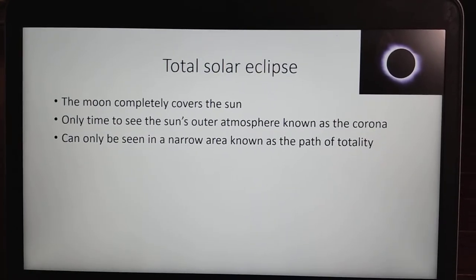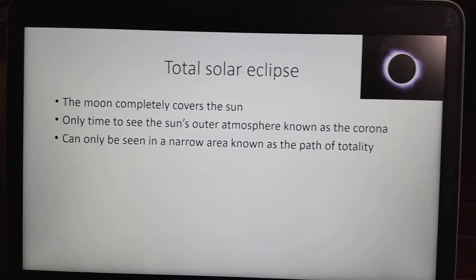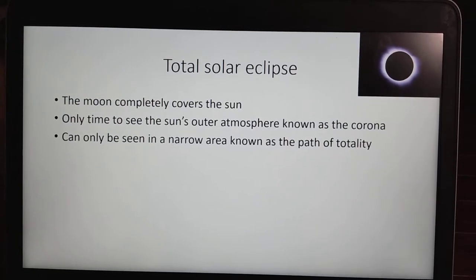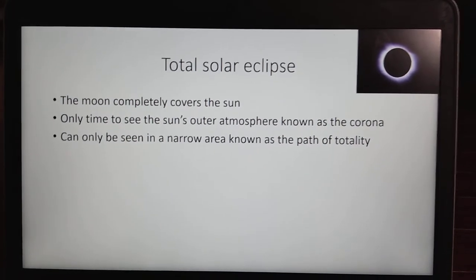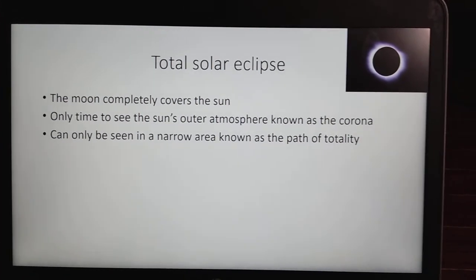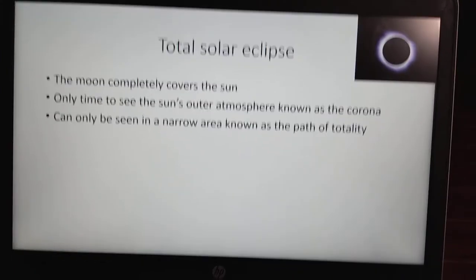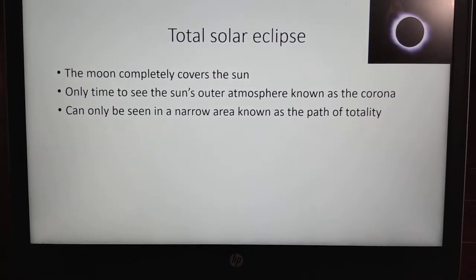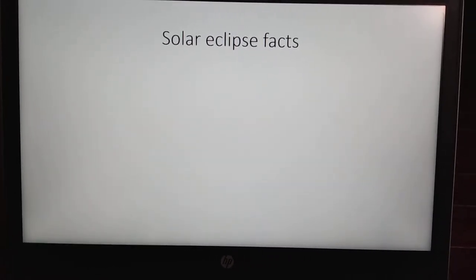And like an annular eclipse, it can only be seen in a narrow area known as the Path of Totality. Anybody who is not in this path will see a partial eclipse. Now, on to some solar eclipse facts.